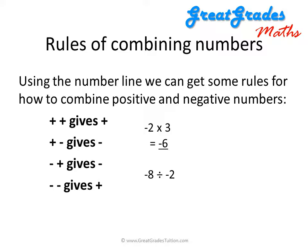Let's try another example: minus eight divided by minus two. Again, our first step is to decide which rule we have to use. Here we have a negative number and another negative number, so we need to use the fourth rule, which tells us that when we combine two negative numbers together, we will get a positive number overall. So our answer to this sum will be positive. Eight divided by two equals four, so our answer is positive four.